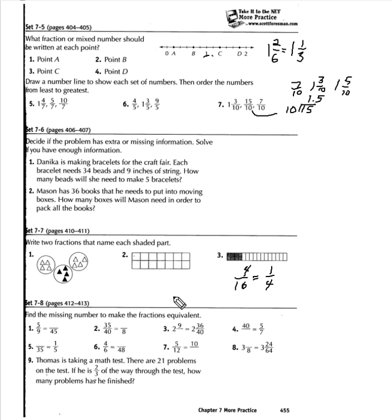Now making fractions equivalent, we need to fill in some numbers here. Let's try number three. Two and nine-somethings are equivalent to two and 36 fortieths. Well, nine divides into 36 four times. So four divides into 40 ten times. So the answer actually is two and nine-tenths. So again, divide nine into 36, take that number and divide it into 40, and that gives you the answer.